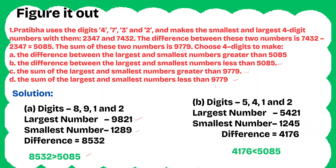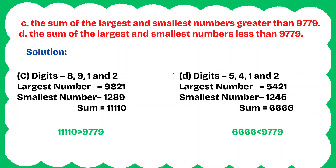Subsections C and D: taking digits 8, 9, 1, and 2 — the largest number is 9,821 and the smallest is 1,289. The sum is 11,110, which is greater than 9,779. For part D, taking digits 5, 4, 1, and 2: the largest is 5,421 and the smallest is 1,245. The sum is 6,666, and 6,666 is less than 9,779.